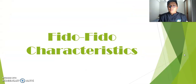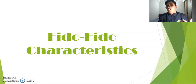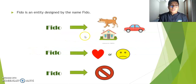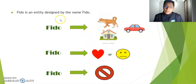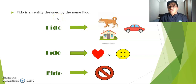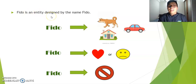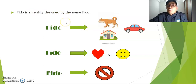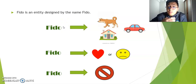So, the Fido-Fido characteristics — I'm going to talk about them and explain them with some examples. Please pay attention. The first characteristic says that Fido is an entity designated by the name Fido. So that means that Fido is something, but Fido could be whatever.